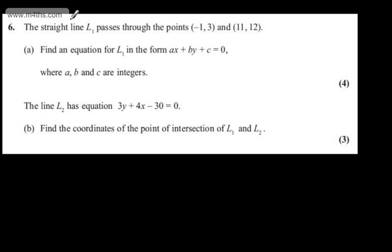In question 6, we're told the straight line L1 passes through the points. In part A, we need to find an equation for L1 in the form AX plus BY plus C is equal to zero, where A, B and C are integers.